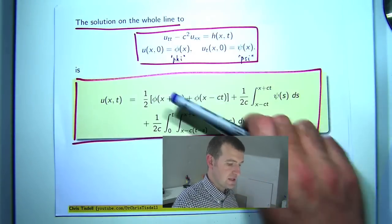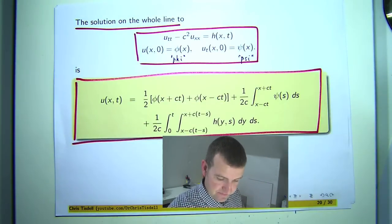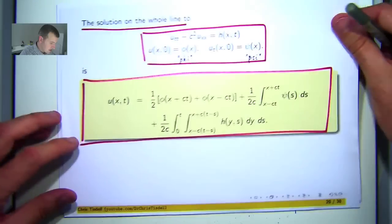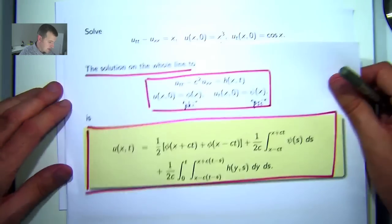So essentially, you just add the two bits together to get this. Now I'm going to discuss a specific example in this presentation.